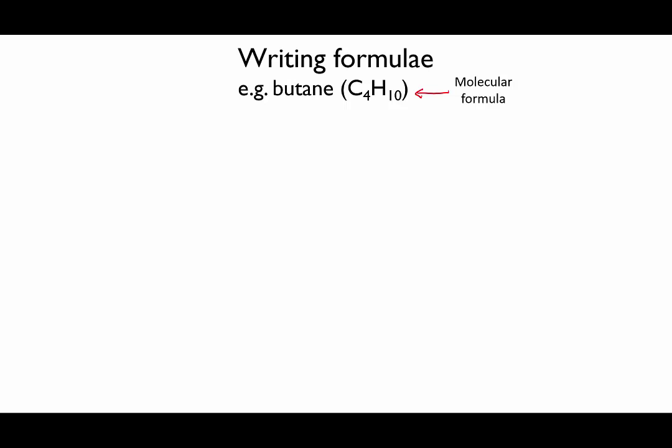You've encountered this problem before, and the way we solved it was with Lewis structures, or structural formulae. Here, each line represents a covalent bond with two electrons shared between the two atoms. This is the most explicit way of drawing the structure of an organic molecule.